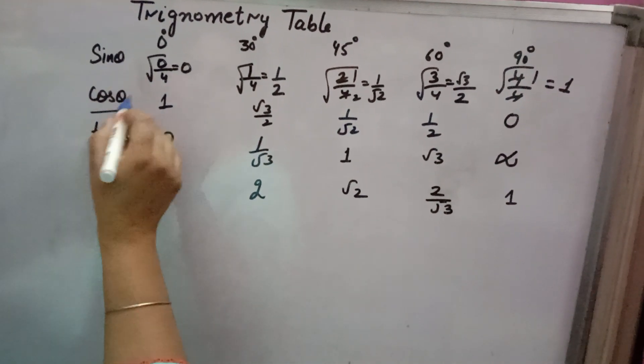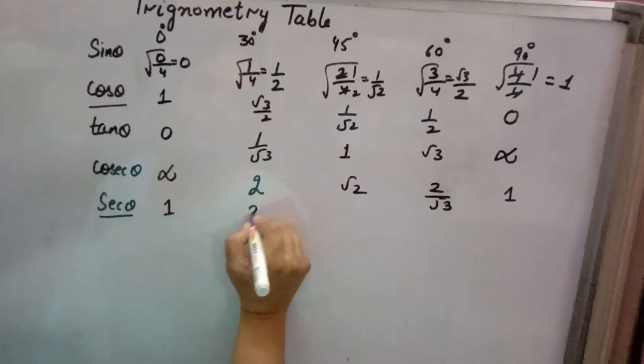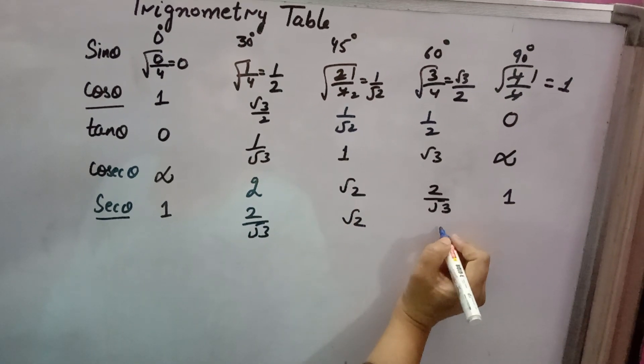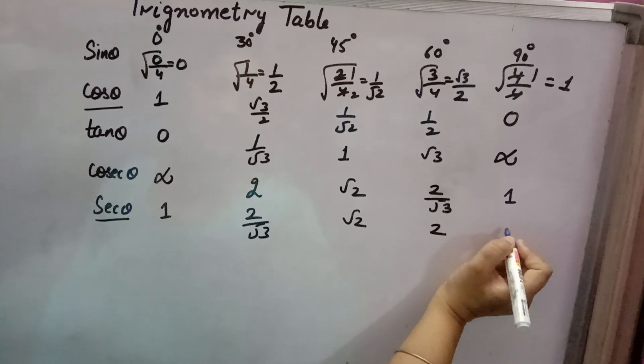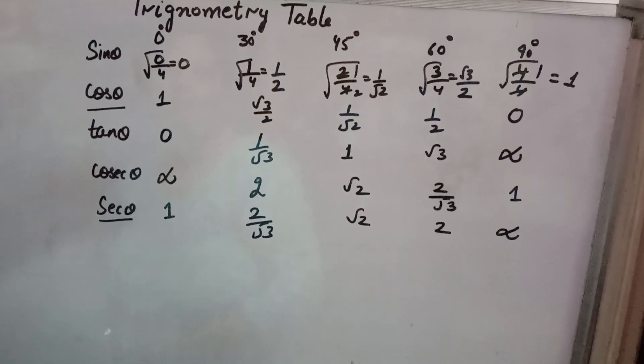For secant theta, reciprocal of cosine: 1 upon 1 is 1. Root 3 by 2 gives 2 by root 3. Reciprocal of 1 by root 2 is root 2. 1 by 2 gives 2. 0 gives 1 by 0, not defined or infinity. Thank you.